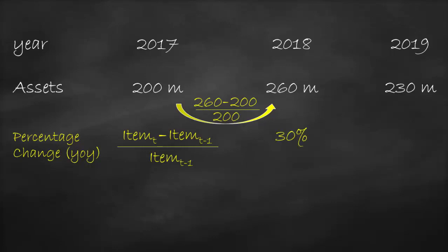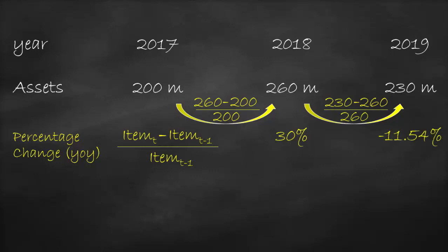This means that the company has higher assets by 30% in 2018 compared to the previous year of 2017. The percentage change in 2019 is $230 million minus $260 million, all divided by $260 million, which is equal to negative 11.54%. This means that the company has lower assets by 11.54% in 2019 compared to the previous year, and so on for each item in the balance sheet.